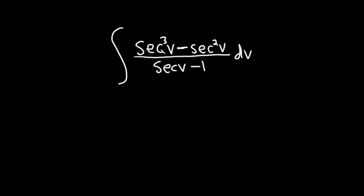It looks like we can do something in the numerator here. We can pull out a secant squared. So let's try to do that. We have the integral of, and then we'll pull out secant squared of v, and then put a parenthesis here.